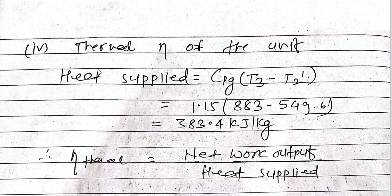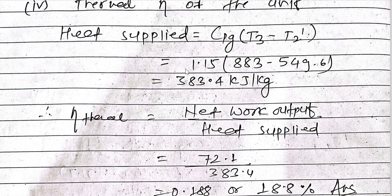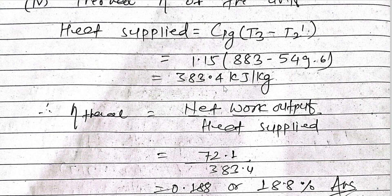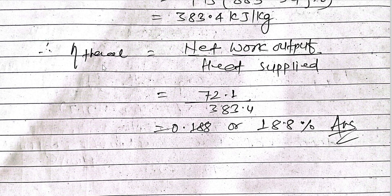Finally, for the thermal efficiency of the unit, the heat supply is: Q = Cp_g × (T3 - T2') = 1.15 × (883 - 549.6) = 383.4 kJ/kg. Therefore, thermal efficiency = net work output / heat supply = 72.1 / 383.4 = 0.188, or approximately 18.8%.